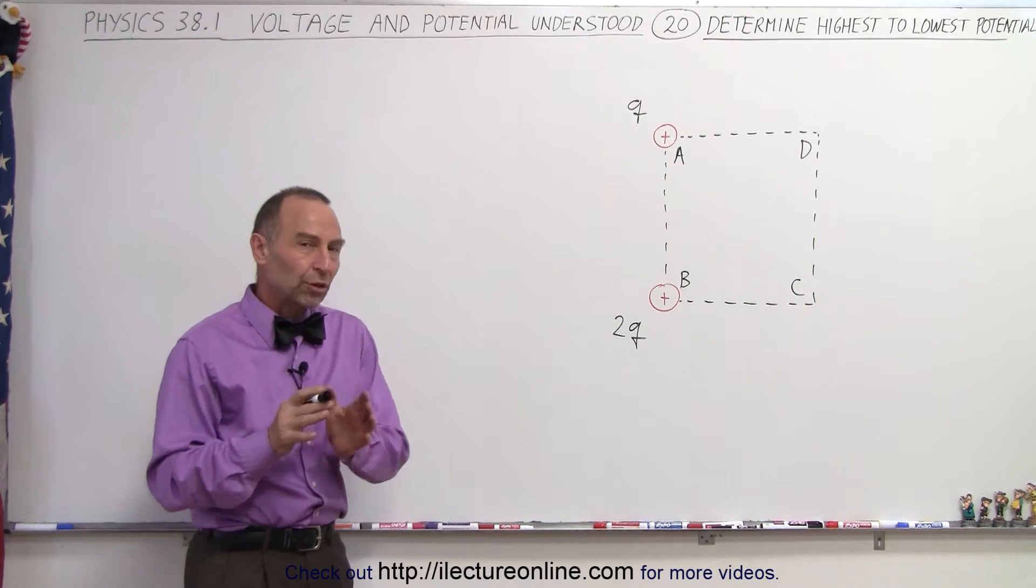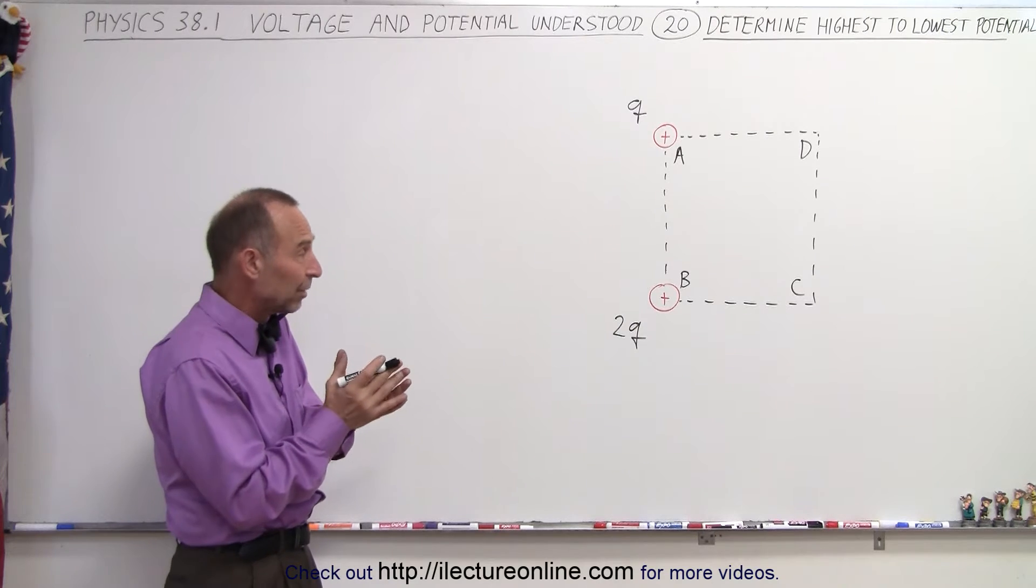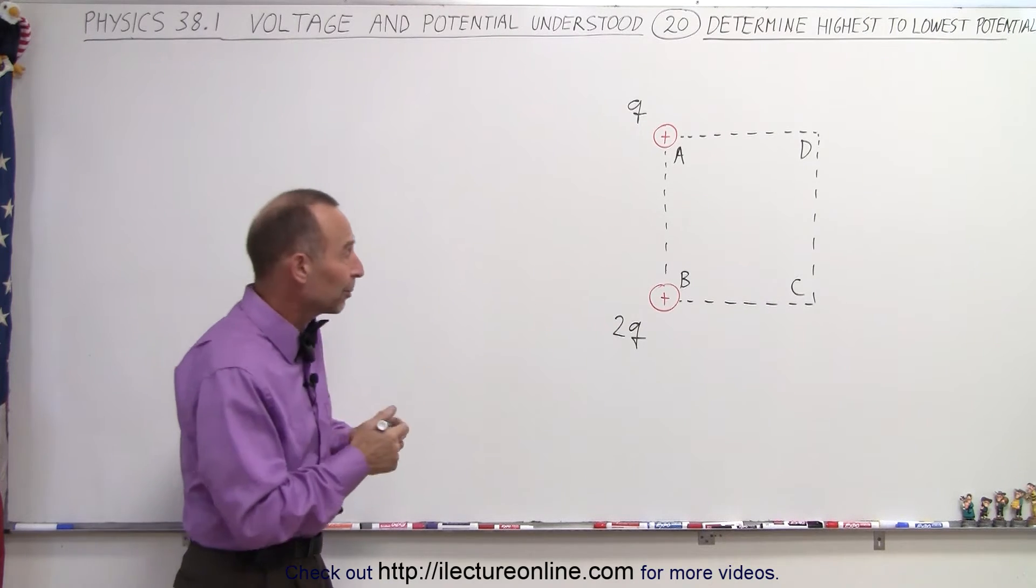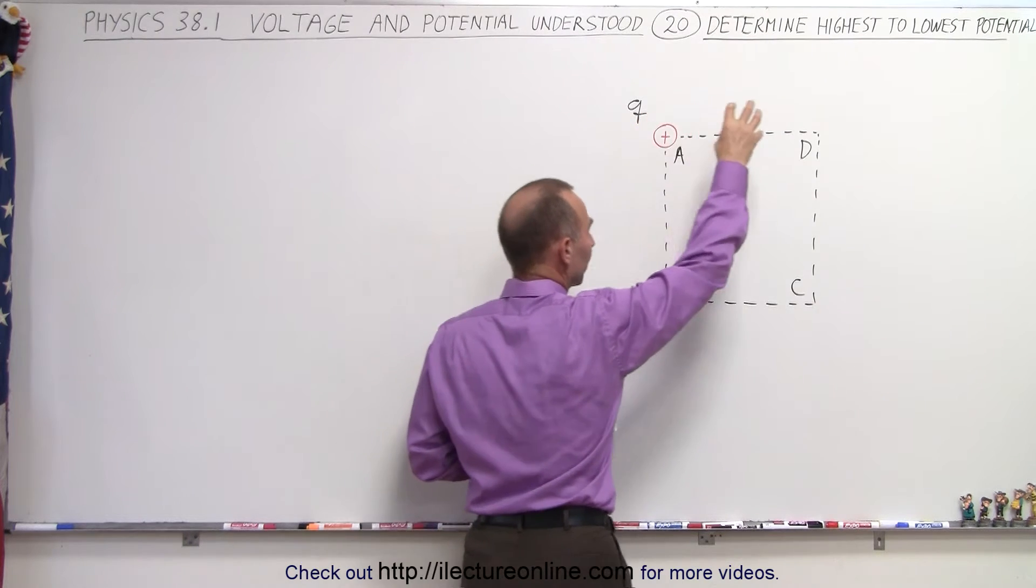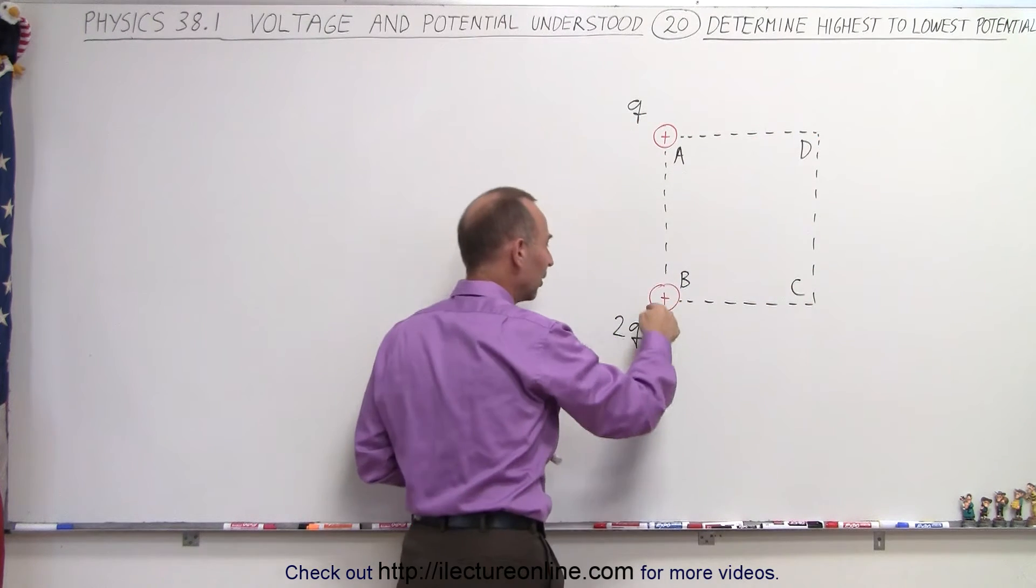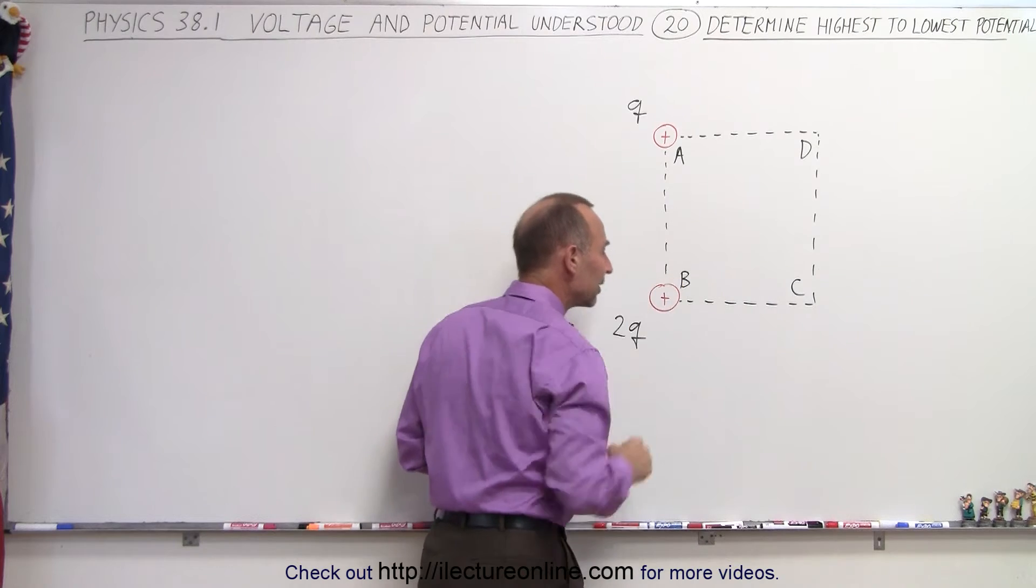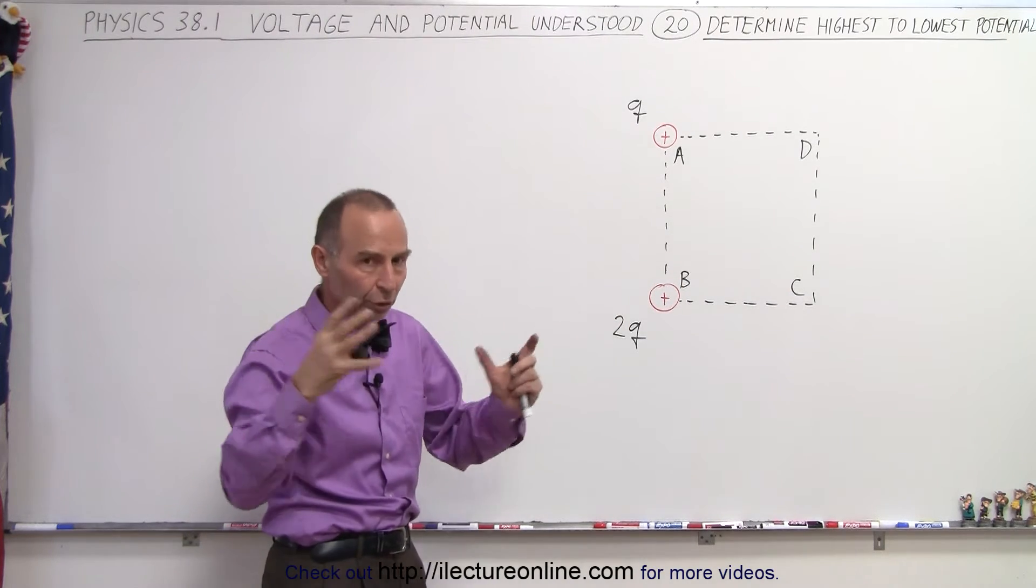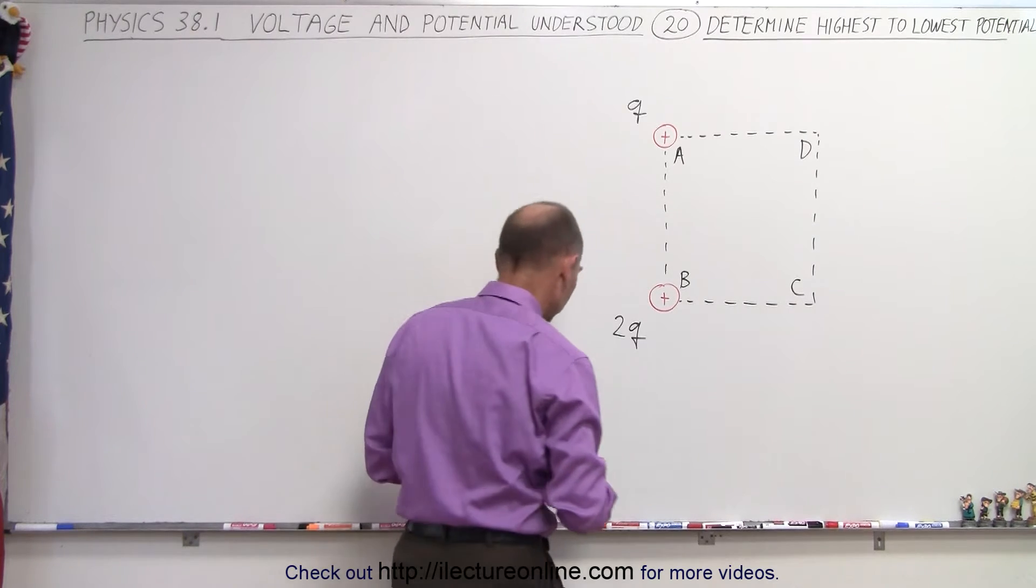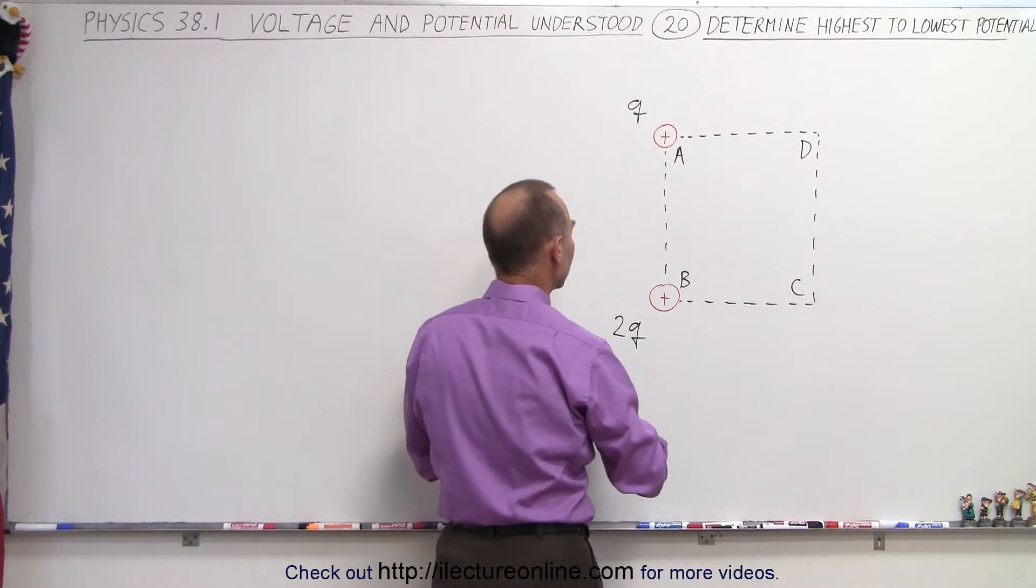Obviously, the place where the largest charge is located is where you have the highest potential. Since there's two Q of charge here, one Q of charge there, and no charge in the other two corners, by all means, here near that charge, you're going to have the highest potential. Potential increases as you get closer to a positive charge. So we can rate this to be number one.